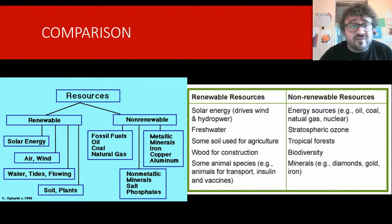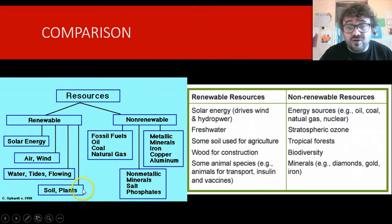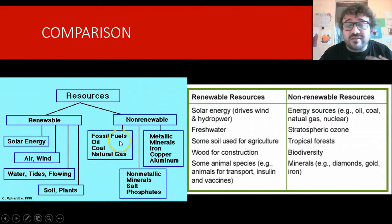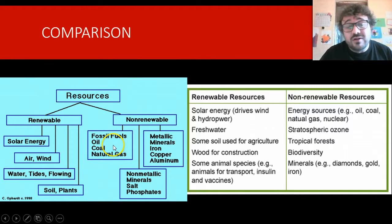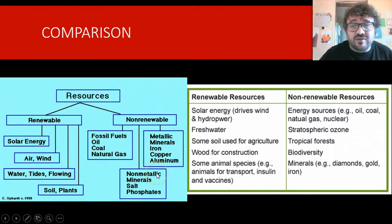Let's have a quick comparison — we've got a little flow chart here as a nice summary. Resources split into renewable: soil energy, air and wind, water, tidal energy, flowing soil and plants — though not all plants. Then we've got non-renewables: fossil fuels — oil, coal, natural gases — metals tend to be non-renewable, and we've got non-metallic minerals, salts, etc.